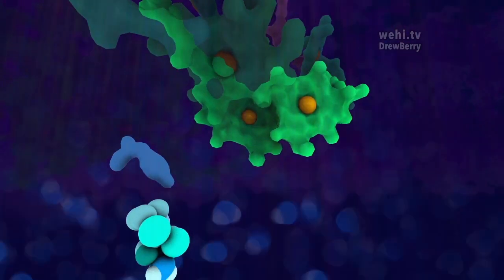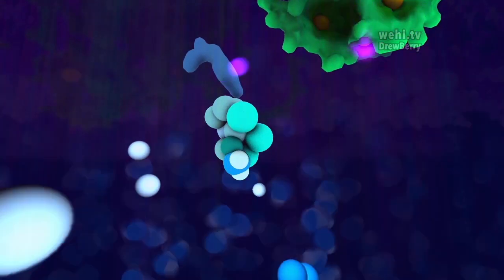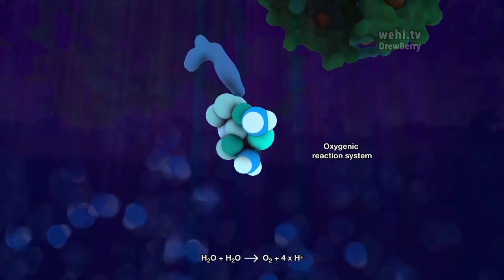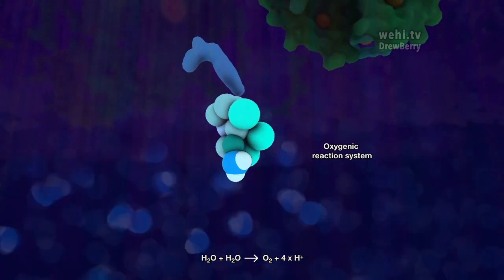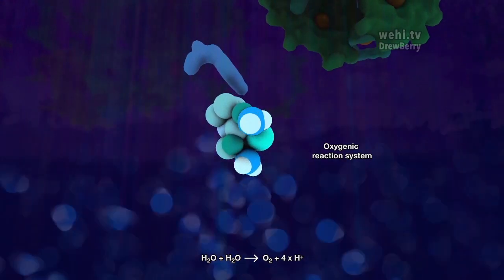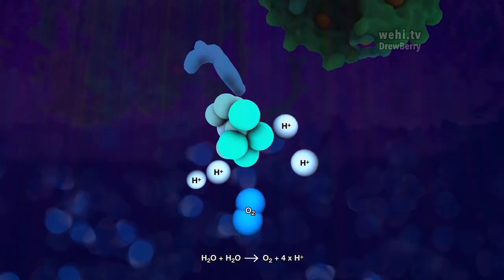To replace this lost electron, a nearby cluster of manganese and calcium ions are able to generate electrons by splitting water molecules. Removing four electrons from two molecules of water generates a molecule of oxygen and four protons.